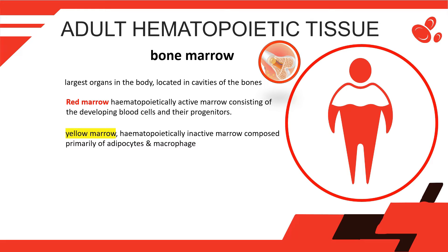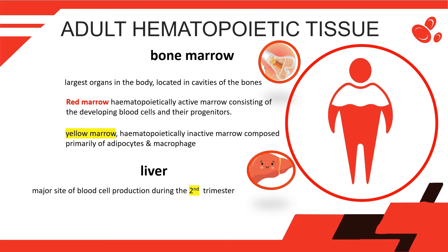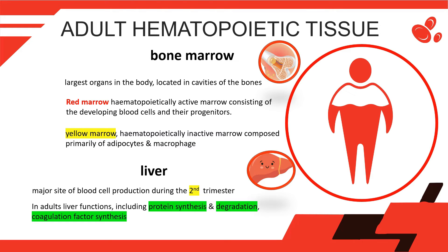The liver is the major site of blood cell production during the second trimester of fetal development. In adults, liver hepatocytes have many functions including protein synthesis and degradation, coagulation factor synthesis, carbohydrate and lipid metabolism, drug and toxin clearance, iron recycling and storage, and hemoglobin degradation in which bilirubin is conjugated and transported to the small intestine for eventual excretion. The liver can maintain hematopoietic stem and progenitor cells to produce various blood cells — called extramedullary hematopoiesis — as a response to infectious agents or in pathologic myelofibrosis of the bone marrow.